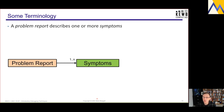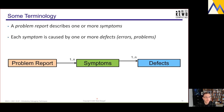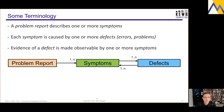A problem report describes one or more symptoms, and I'll assume for the rest of this talk that a problem report is legitimate. Each symptom is caused by one or more defects, and the evidence of a defect is made observable by its symptoms. So we have a one-to-many-to-many relationship: one problem report can manifest multiple symptoms, each symptom can be created by multiple defects, and each defect can have multiple symptoms.